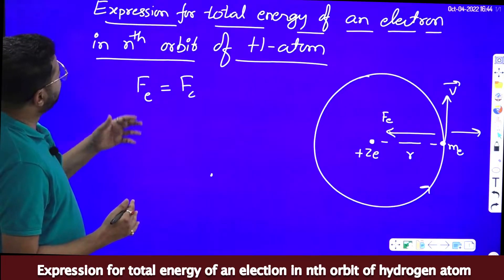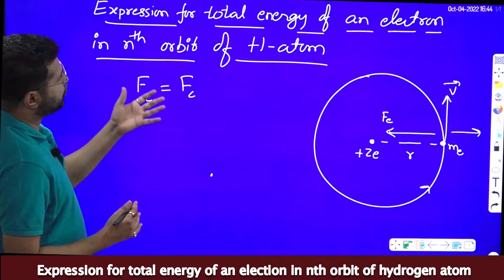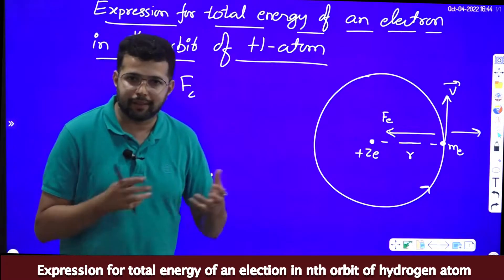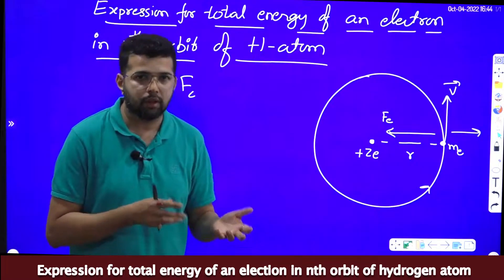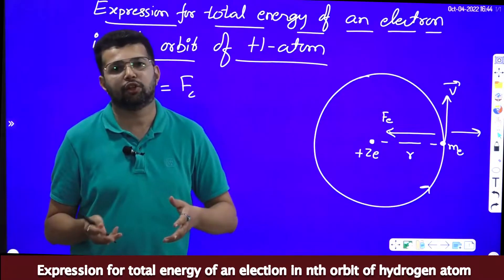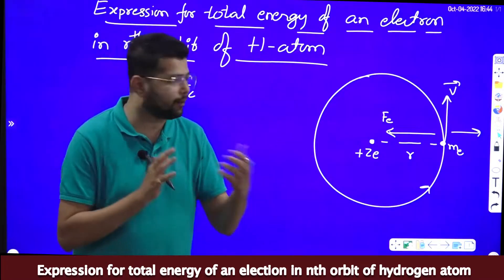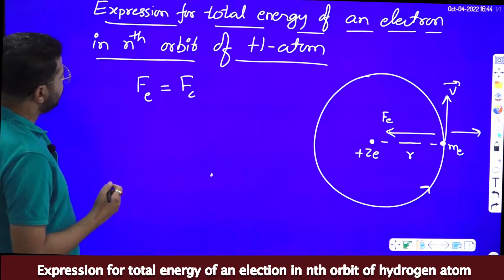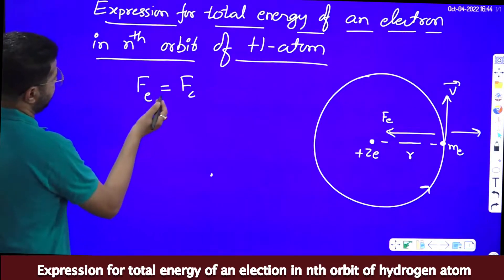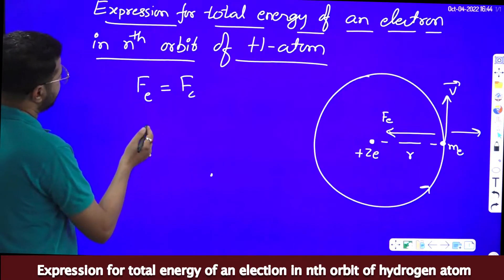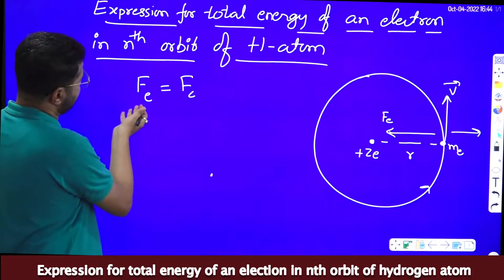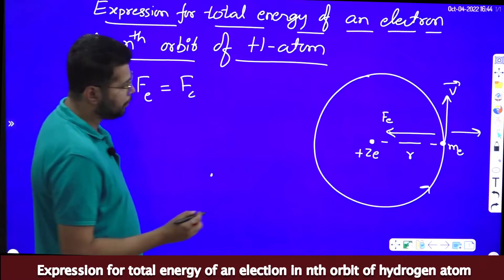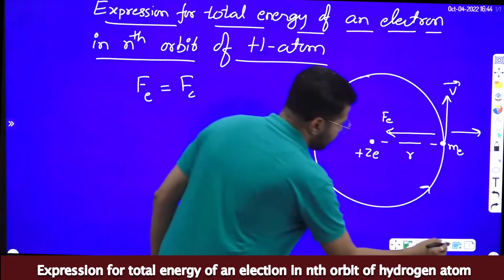We have to derive an equation for total energy. Total energy means we have to calculate kinetic energy and potential energy, then add them. First, we will equate the electrostatic force of attraction and the centripetal force.